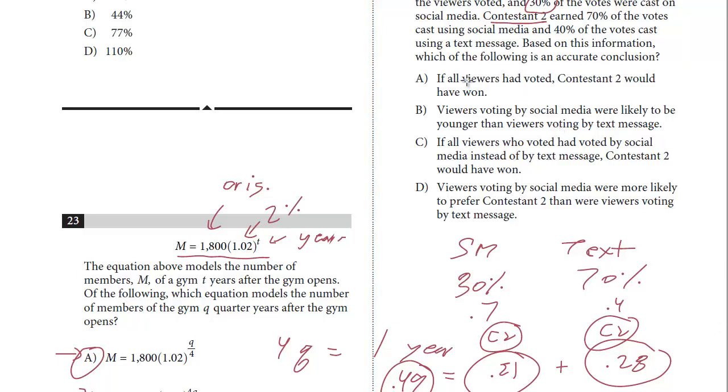Let's take a look at the choices. If all the viewers had voted, contestant two would have won. We know that only 10 percent of the viewers voted, that was a sample, but there's no indication that if all the viewers had voted anything would change. The sample is fair. We just can't make that determination. In fact, it's probably not true. B: viewers voting by social media were more likely to be younger than viewers voting by text message. Is there any information at all about the age of the viewers? No. You can't make any determination about that. We only can tell based on the population and the mediums and nothing about their age.